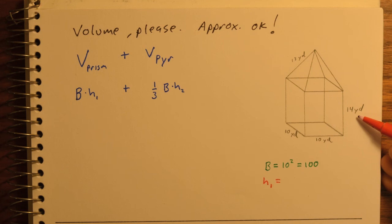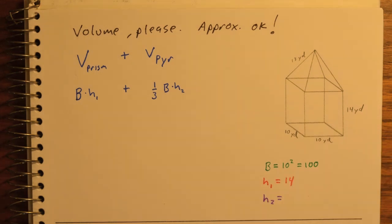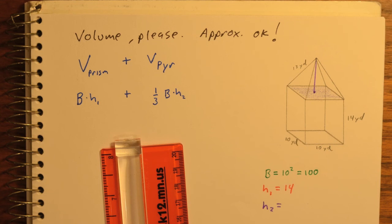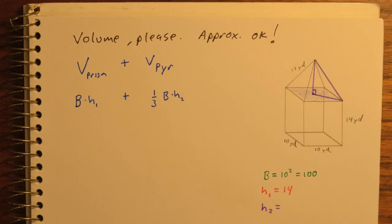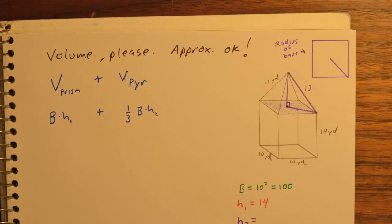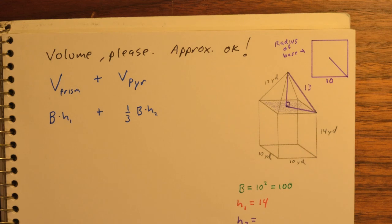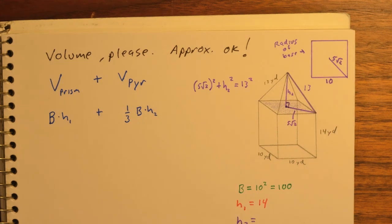Now the height of the pyramid is going to be a little bit trickier. I want to find that length. I'll make myself a right triangle using the lateral edge, which is 13, and then the height. We need to find the radius of the base. If the base is 10, using special right triangles, I know that the radius is 5 root 2.